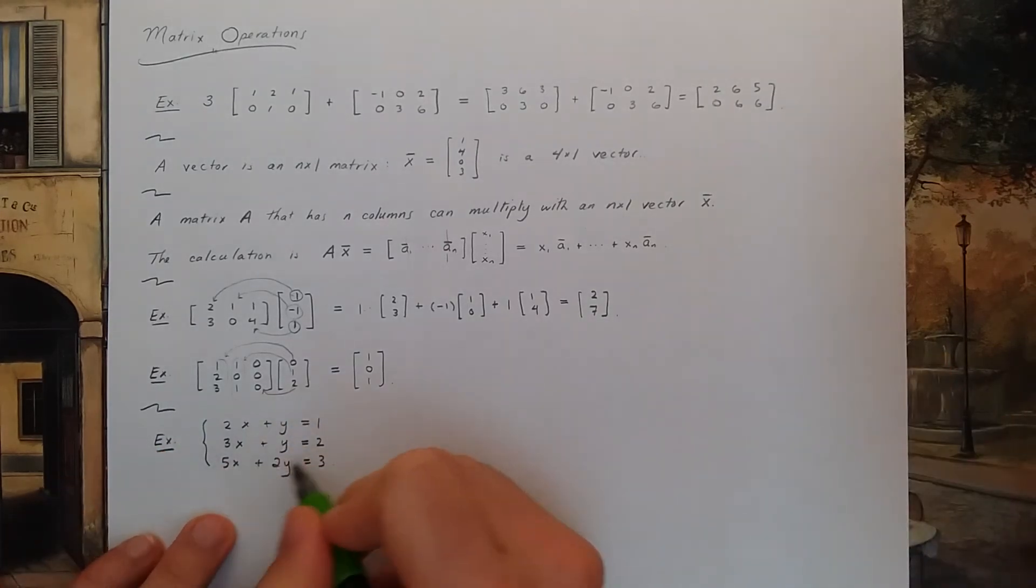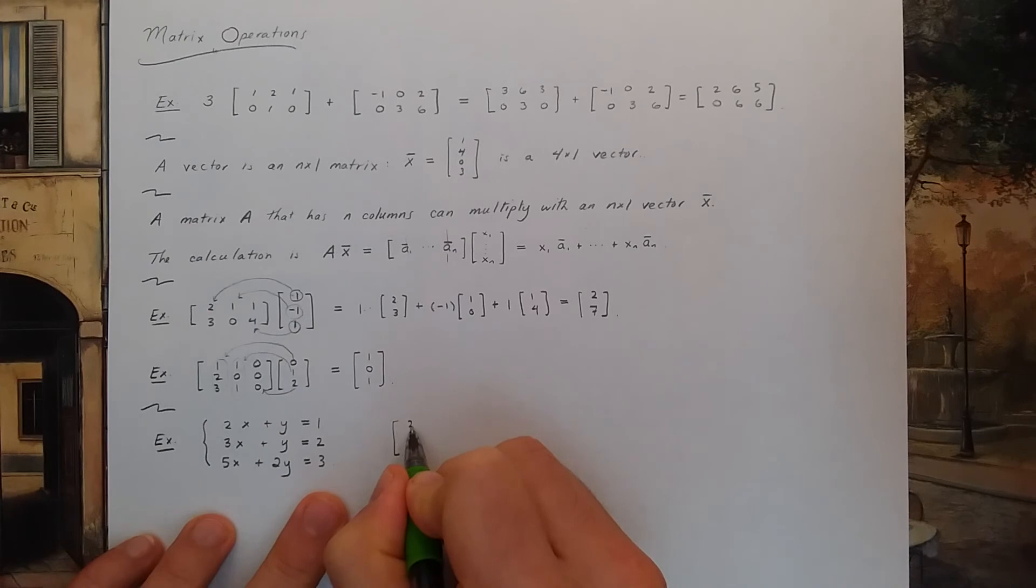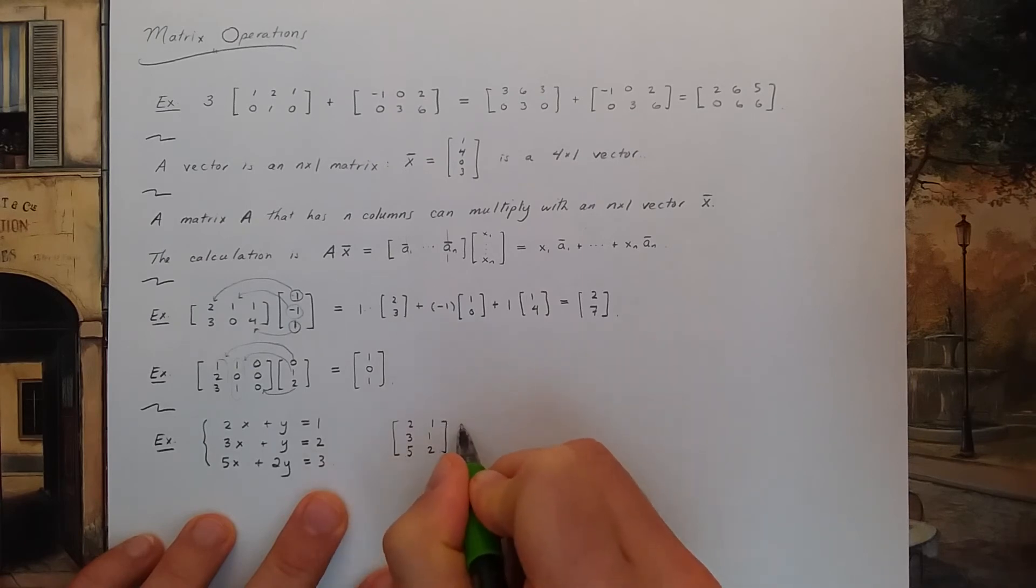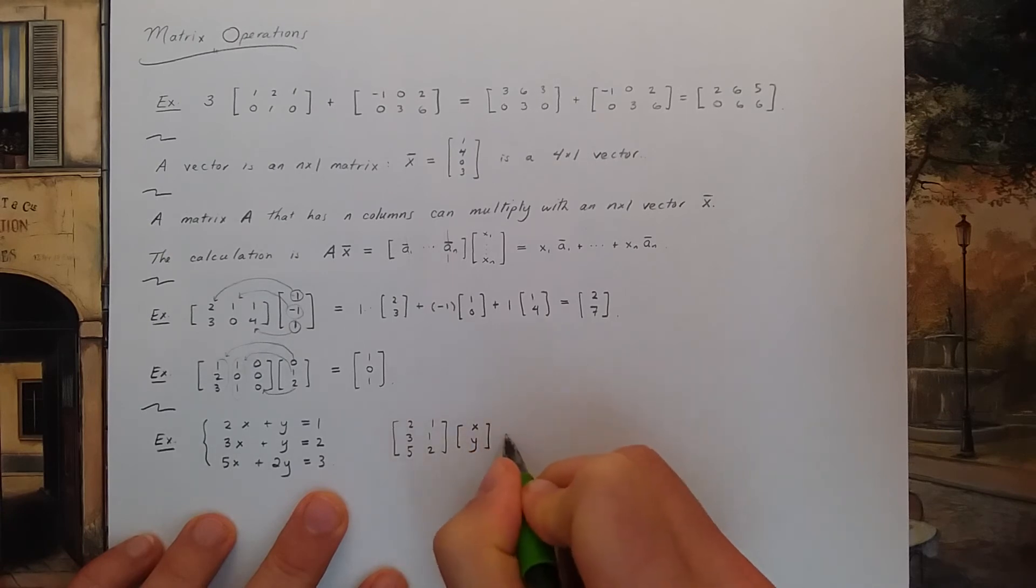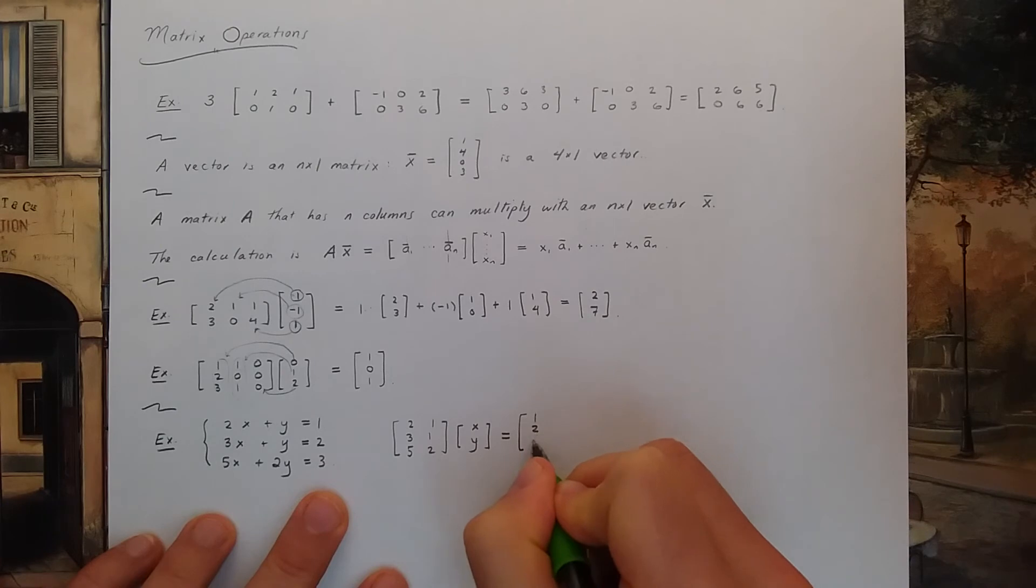You can take a linear system and write it as a matrix multiplication. So this is the same thing as 2, 1, 3, 1, 5, 2 times the column vector x, y is equal to the column vector 1, 2, 3.